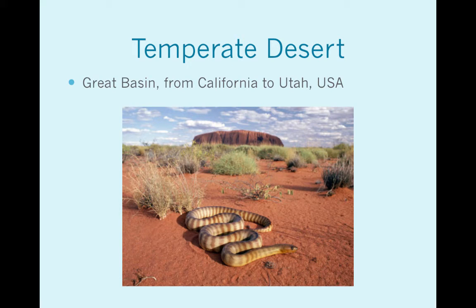Temperate deserts: the Great Basin area from California to Utah. A little bit of scrubby brush out there, some of the more classic cacti, but not a whole lot of variety of organisms. Real low biodiversity because the conditions are so extreme.